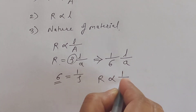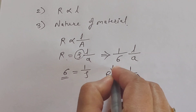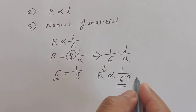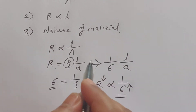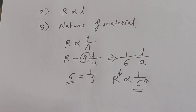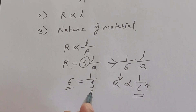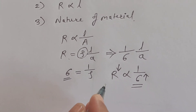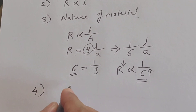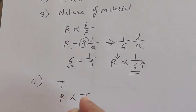Resistance is inversely proportional to conductivity — as conductivity increases, resistance decreases, and vice versa. For example, for pure metals, resistance is less because conductivity is high. For insulators, conductivity is less, so resistance is high. The fourth factor is temperature — resistance is directly proportional to temperature.